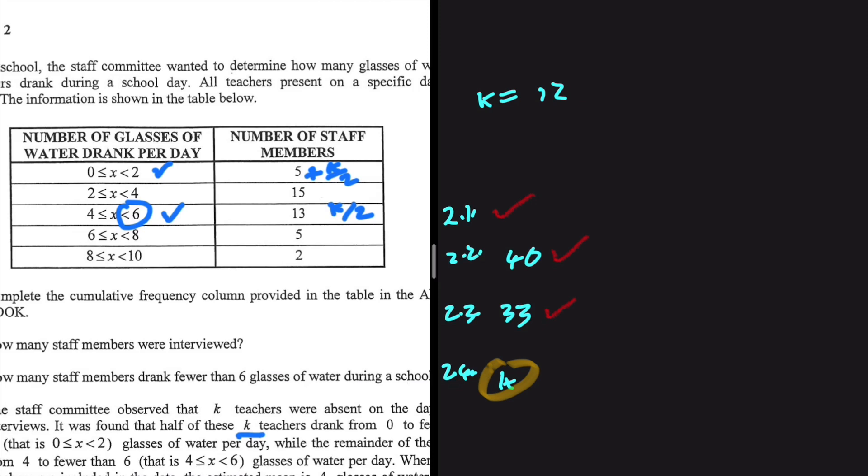And the remaining which will be k divided by 2 drank between four to six. So yeah, the number of staff members for four to six is 13 plus k divided by 2. That is the important part you need to be able to comprehend that in order to answer this question.